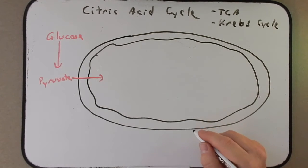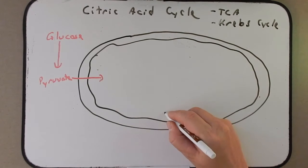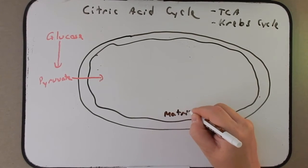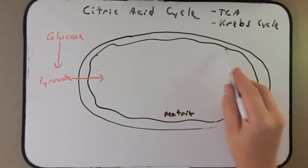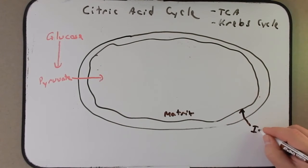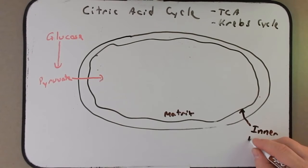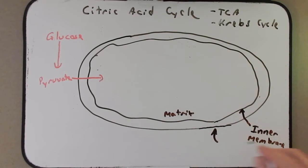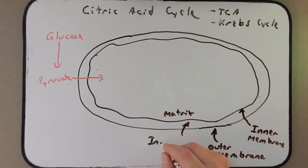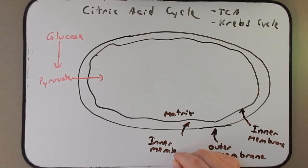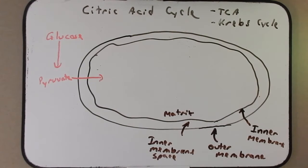Let's take a moment to label the parts of the mitochondria so we're familiar with them. The inside of the mitochondria — the lumen of it — is called the matrix. This membrane on the inside is called the inner membrane. This one on the outside is cleverly called the outer membrane, and this space in between the two membranes is called the intermembrane space. For today we're going to be mainly focusing on what's happening inside of the matrix.